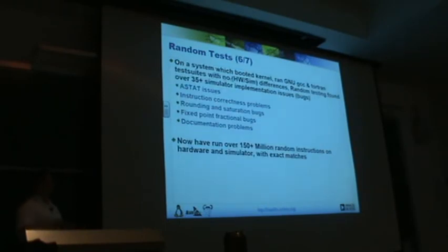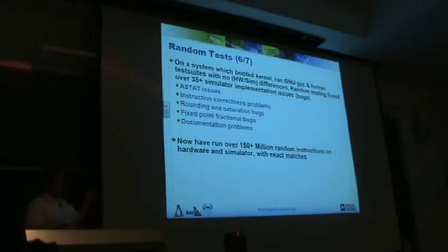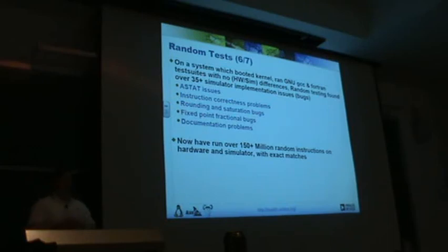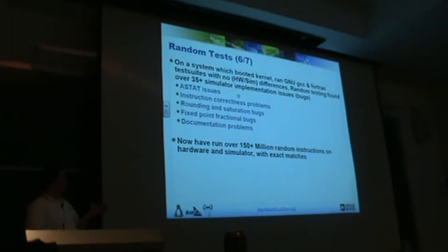What we did on this Blackfin system — which had already booted kernels and run random GCC and Fortran test suites with no differences between hardware and simulator — random testing did actually find what I would consider a huge number of bugs, including status register problems, instruction correctness issues, rounding and saturation problems, fixed-point fractional problems, and documentation problems. We now have a system that has run over 150 million random instructions, both on hardware generating test cases and running them on the simulator and comparing them all.